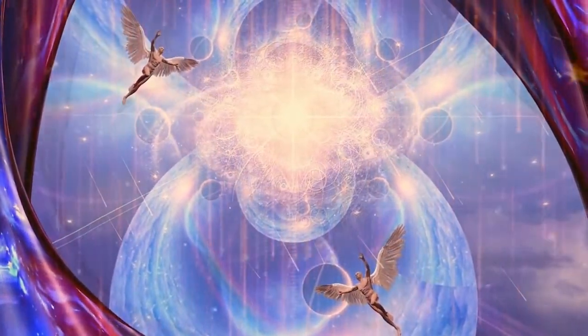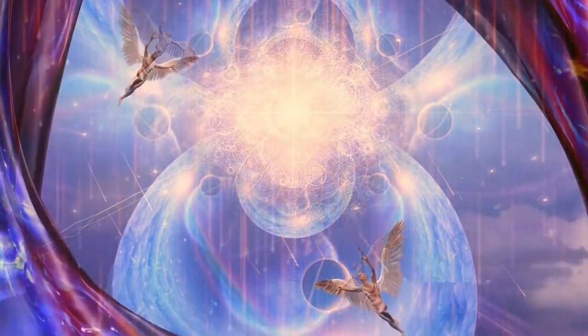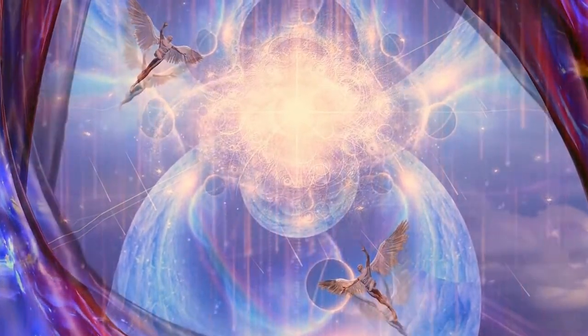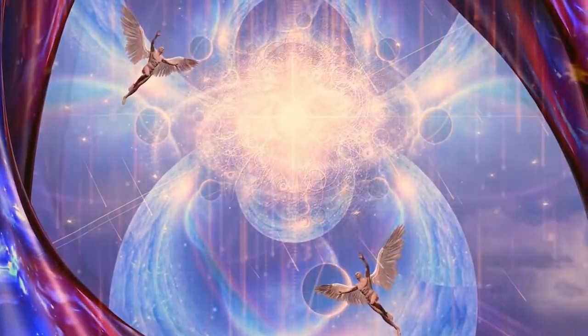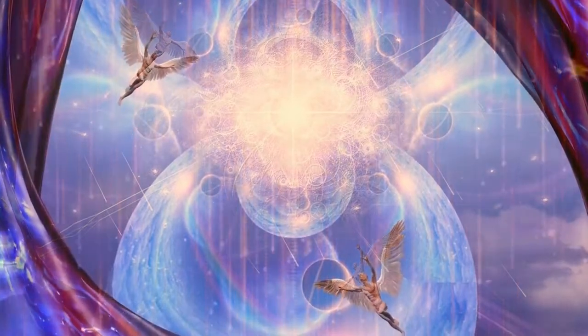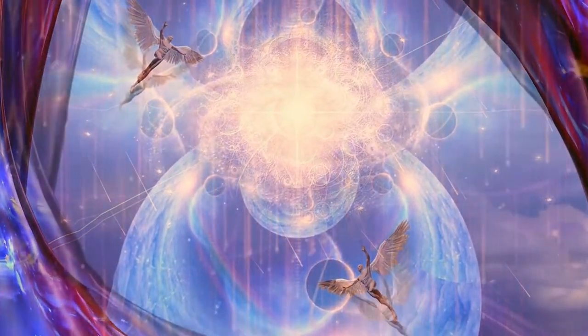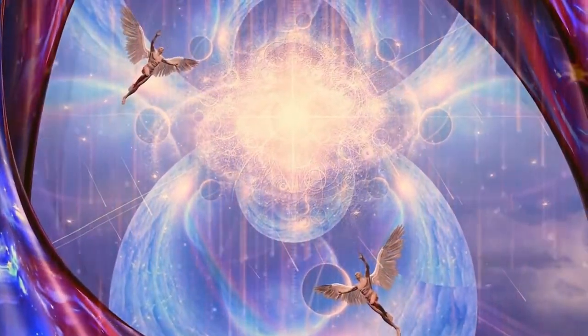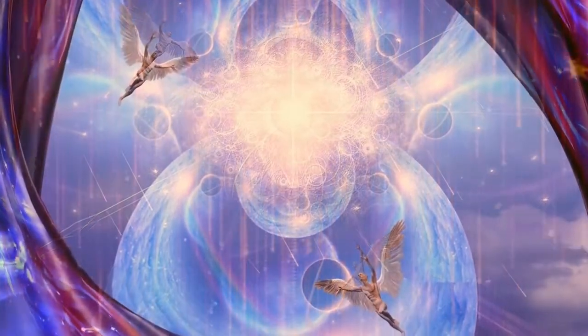He made darkness his secret place, his pavilion round about him were dark waters and thick clouds of the skies. At the brightness that was before him his thick clouds passed, hailstones and coals of fire. The Lord also thundered in the heavens, and the highest gave his voice, hailstones and coals of fire.